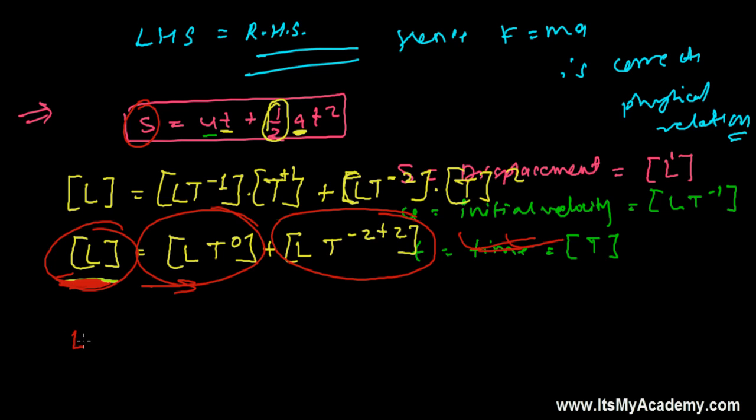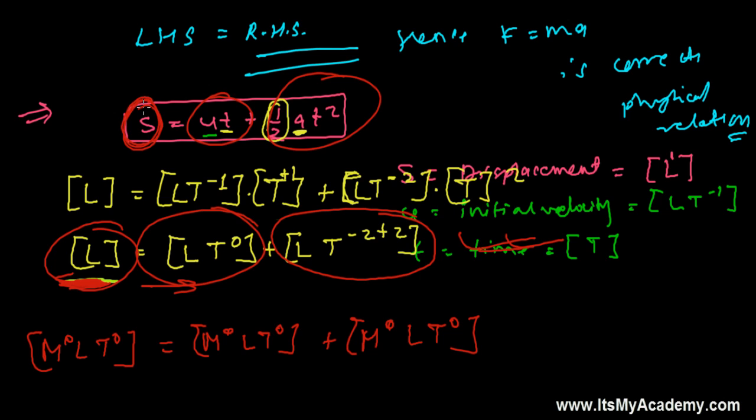The dimension of S is simply M^0L^1T^0. Similarly, dimension of U times T we are getting M^0L^1T^0. And similarly, dimension of half AT squared we are getting M^0L^1T^0. From the principle of homogeneity, I can say that the dimension of each term on both sides of the equation is same, so that's why this is a correct physical relation.